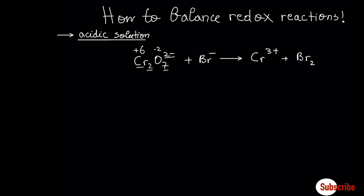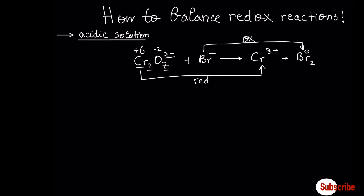Chromium goes from plus six to plus three — that's reduction. Bromide goes from minus one to zero — that's oxidation. Now let's write the two half reactions.